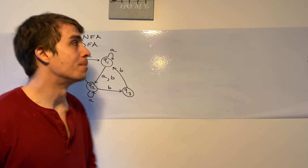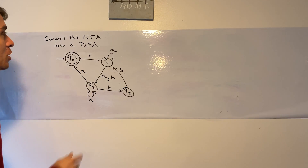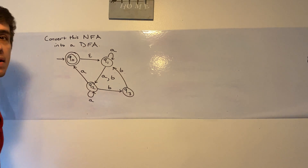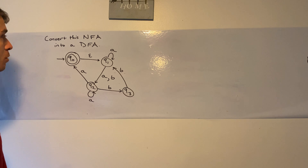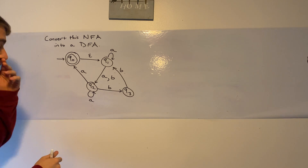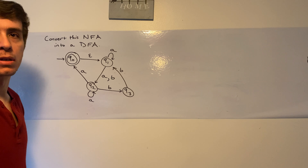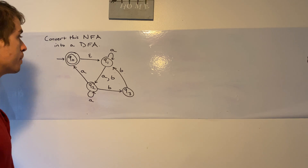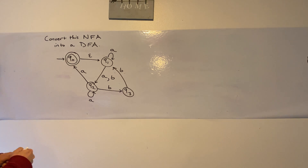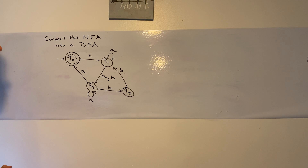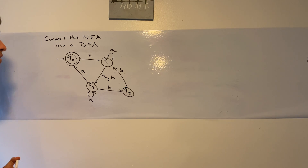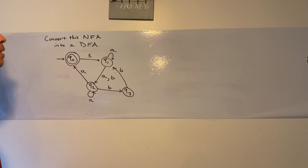We have a fun problem today, which is we have to convert this NFA into a DFA. I get this question all the time from students: how do you actually convert an NFA to a DFA? My guideline is at each point to find the epsilon closure of the set of states that you're in, and then figure out where you can go from there.